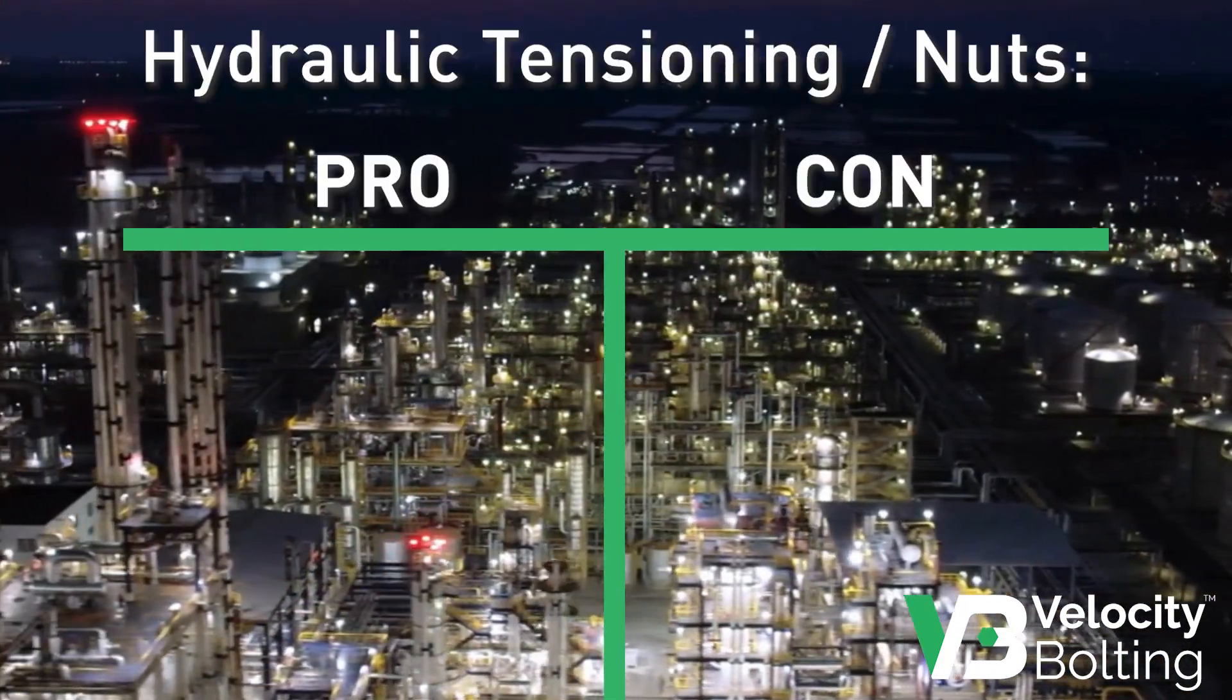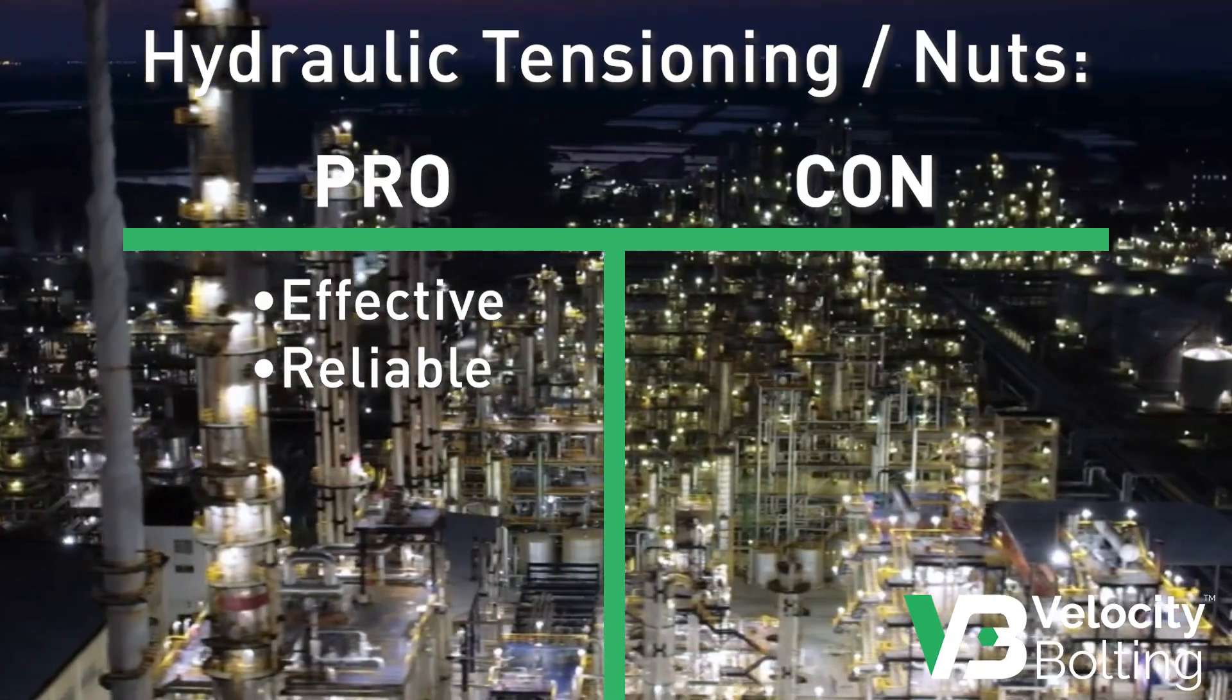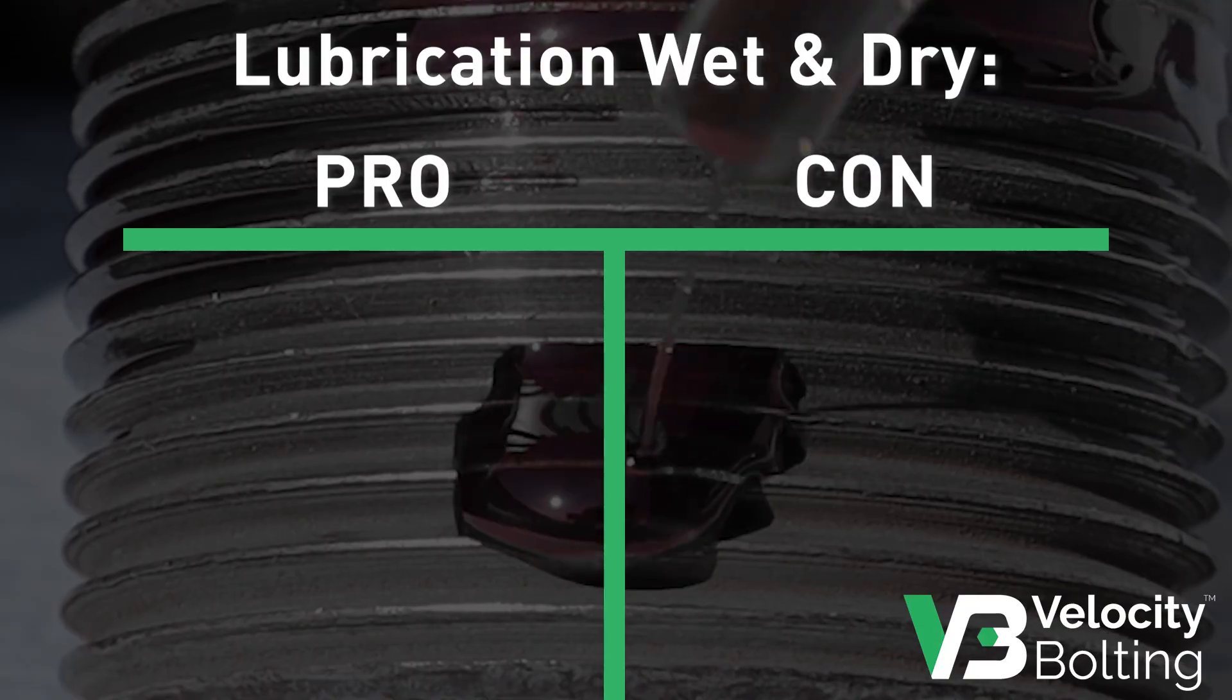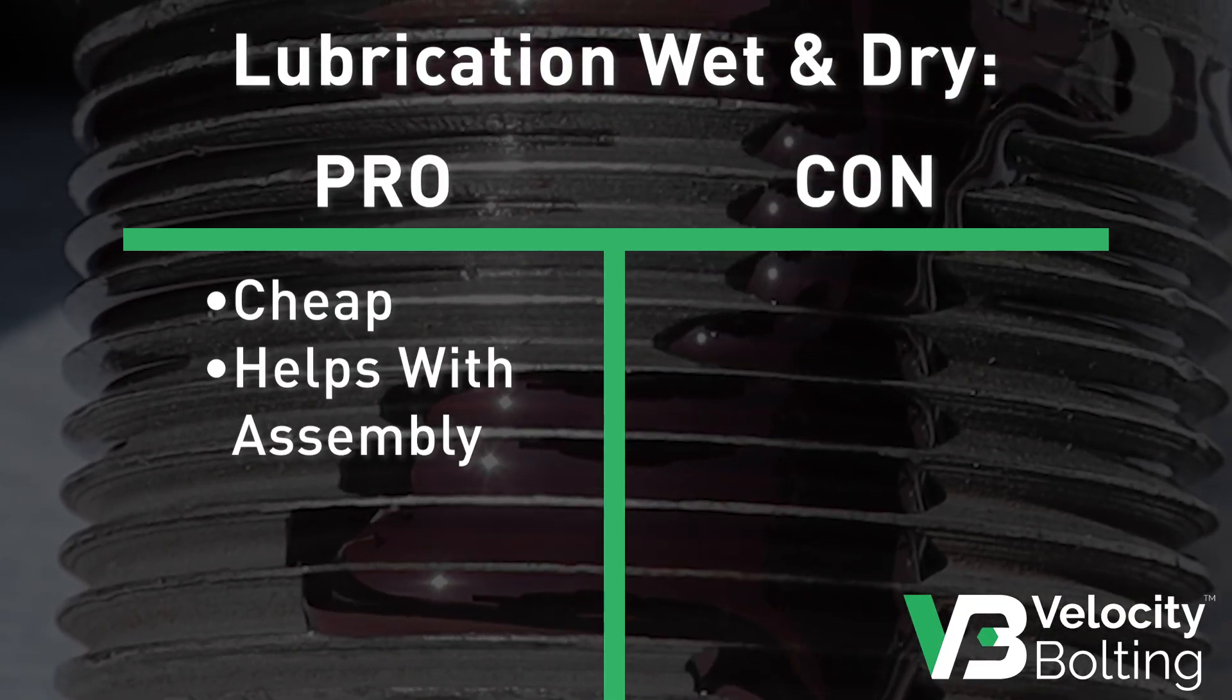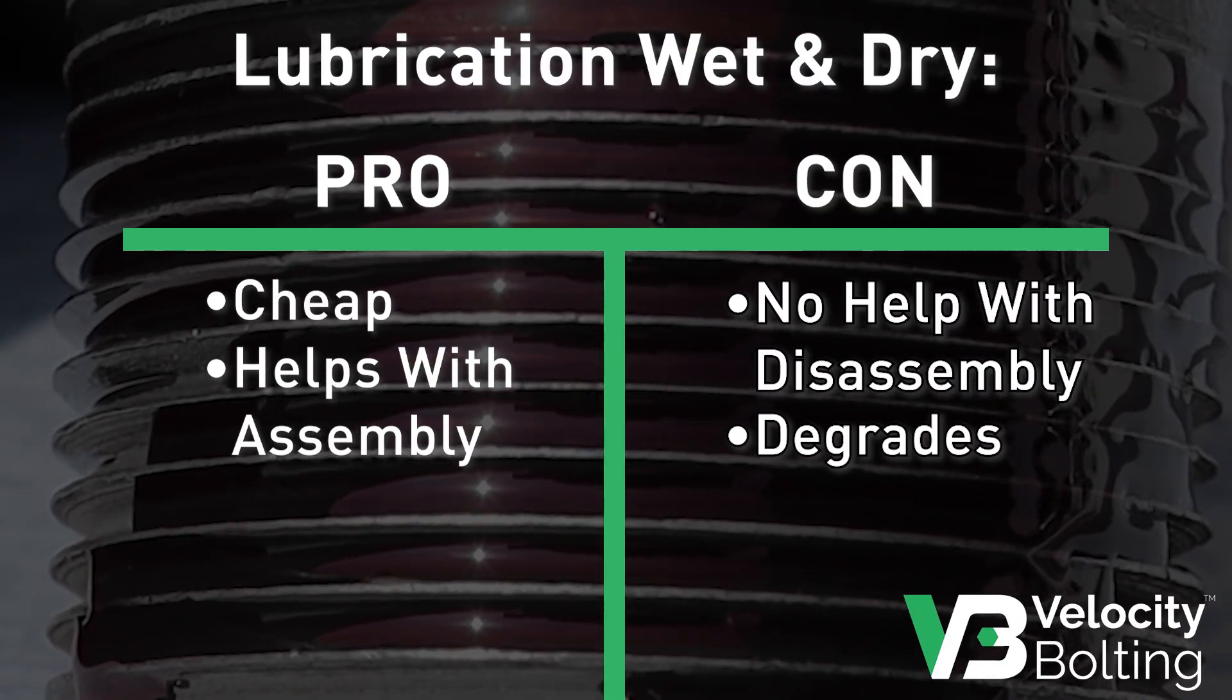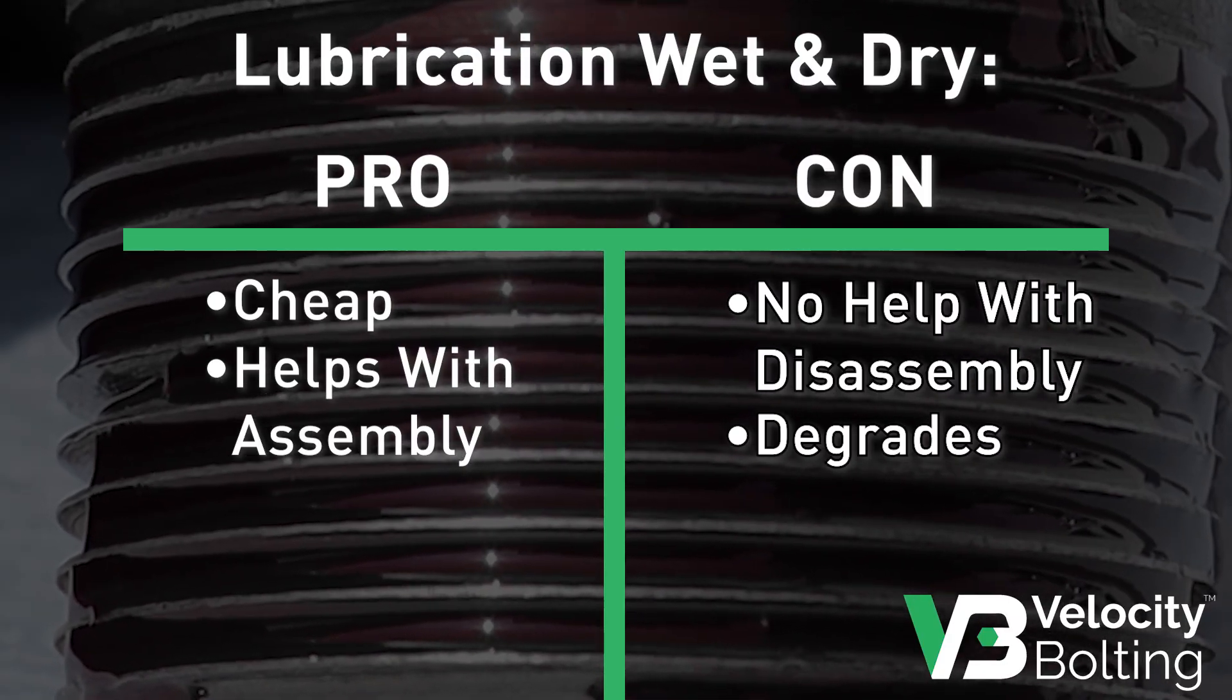Hydraulic tensioning or hydraulic nuts are effective solutions, but they are also the most expensive and overkill for most applications. Lubrication is the cheapest alternative, but it only helps with assembly, before being broken down or expelled after years of service, long before disassembly.